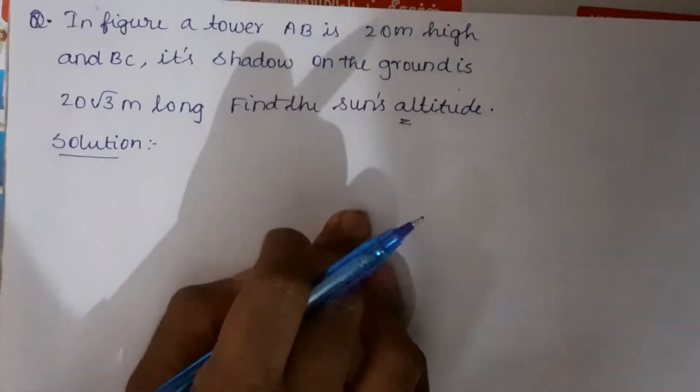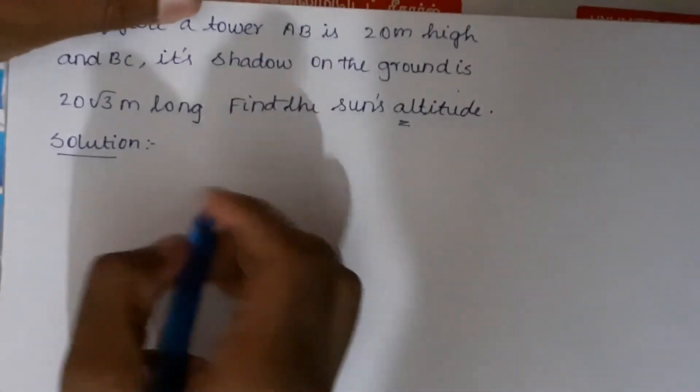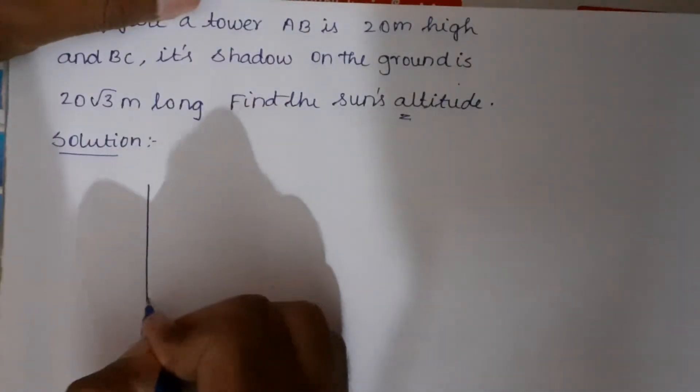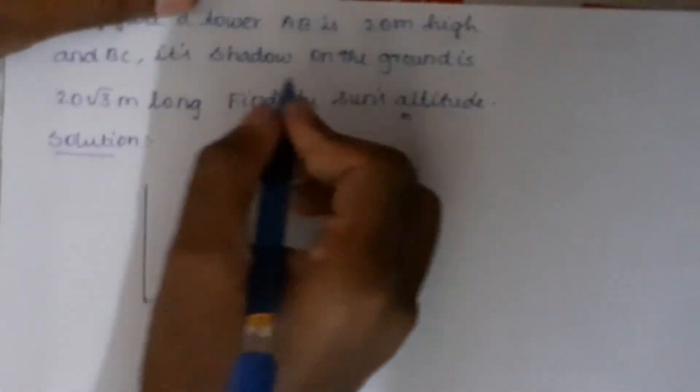As per the question, AB is the tower and BC is the shadow on the ground.